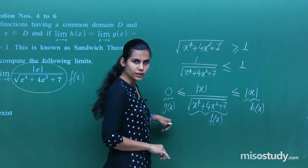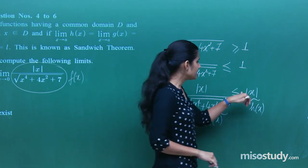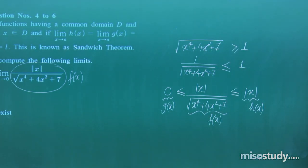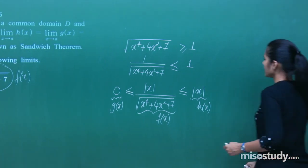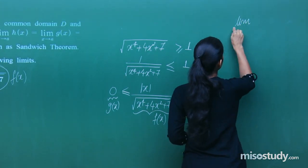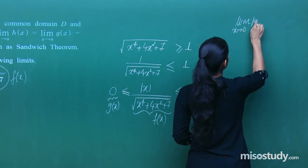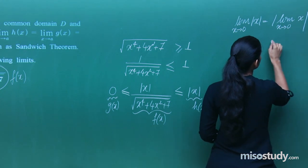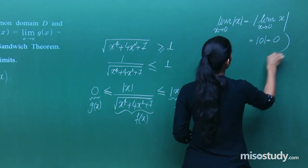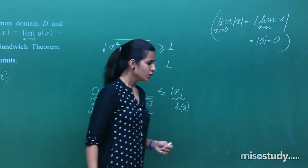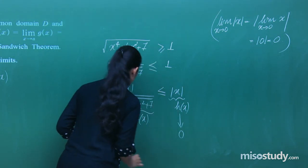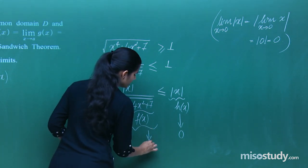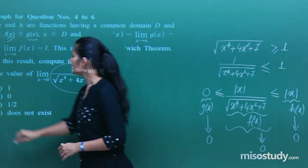Limit x tends to 0 of 0 is 0. Since mod is a continuous function, limit x tends to 0 of |x| = |0| = 0. Both bounds approach 0, so by the sandwich theorem, the limit of f(x) is also 0.